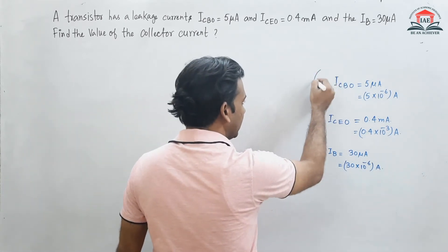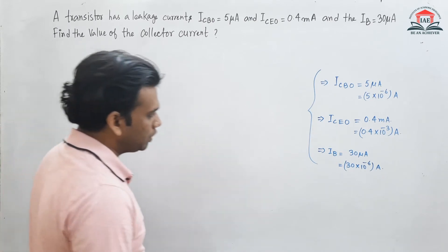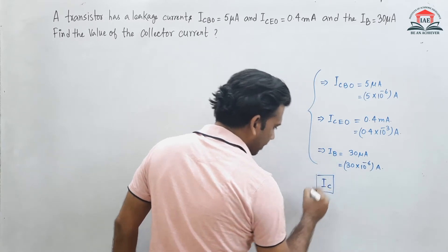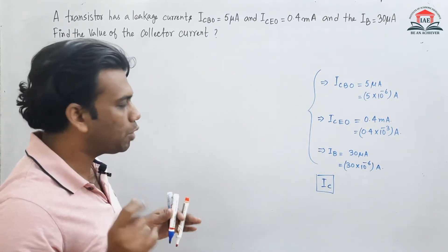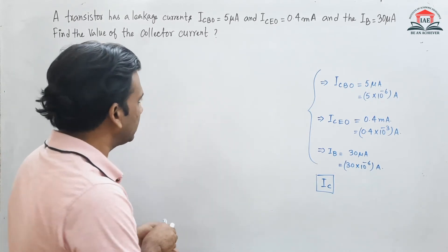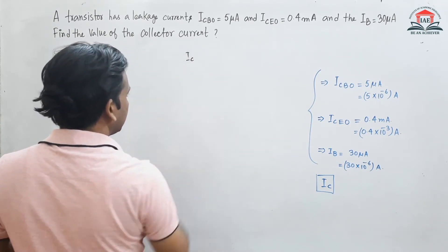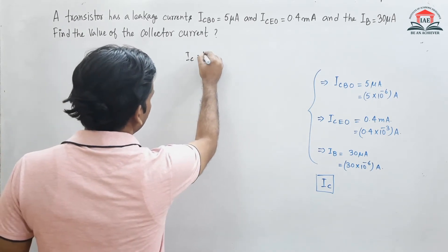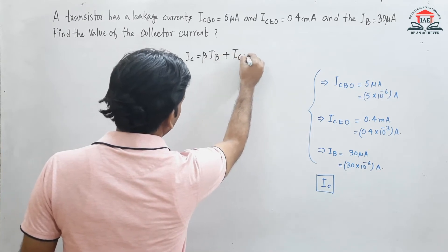These are the data given. Now we need to find the collector current. Remembering the collector current equation, IC equals beta into IB plus ICEO.